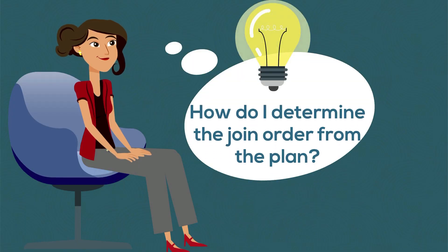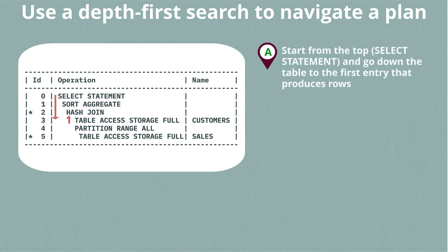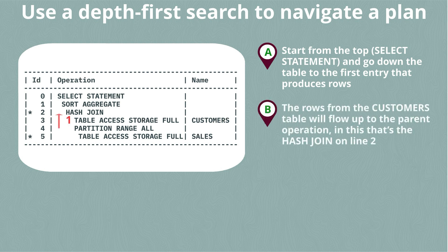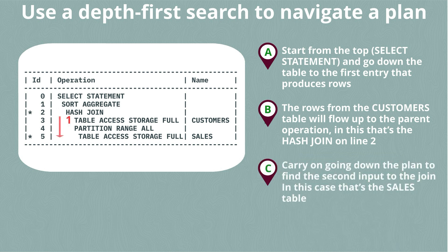How do I determine the join order from the plan? The easiest way is to do a depth-first search — we start at line zero of the plan, which is the select statement, and then we walk down through the table until we find the first entry that actually produces data or rows. In this example, that would be line three: table access storage full on the customers table. The rows from the customers table will flow up to the parent operation, which in this case is the hash join on line two of our plan. A hash join needs two inputs in order to operate, so although rows are flowing into the join from the customers table, we'll need a second input before that hash join can actually begin.